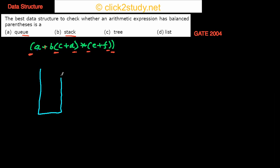Let's go through this arithmetic expression from left to right. If we see a left parenthesis we push, and if we see a right parenthesis we pop. I see a left parenthesis here, so I push a symbol. I go ahead and see another left parenthesis, so I push again. Then I see a right parenthesis, so I pop — I've popped this symbol out.